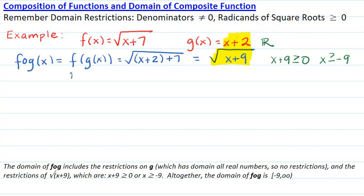Putting both restrictions together, the domain is all numbers greater than or equal to negative 9, or in interval notation, negative 9 to infinity.